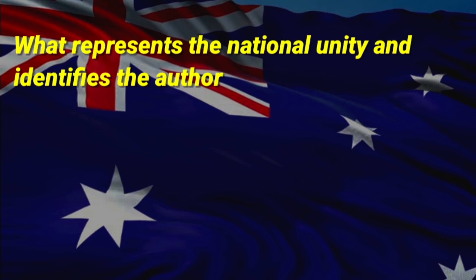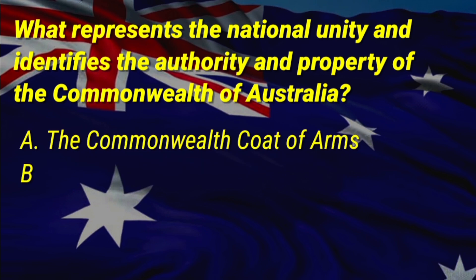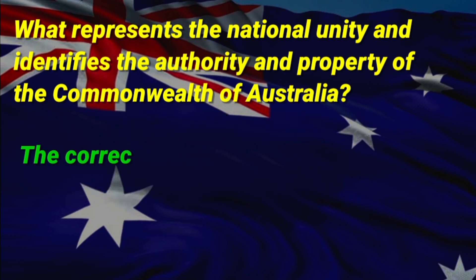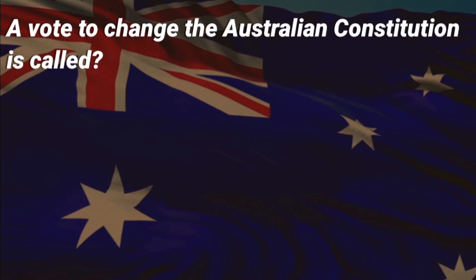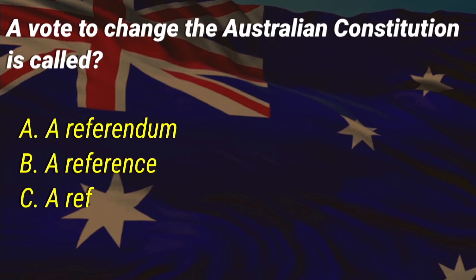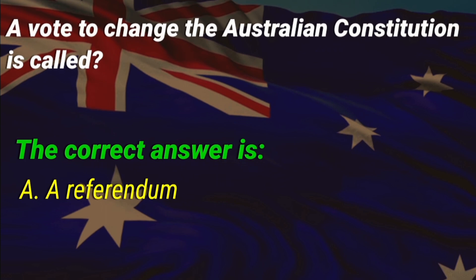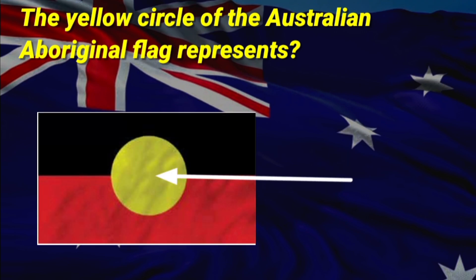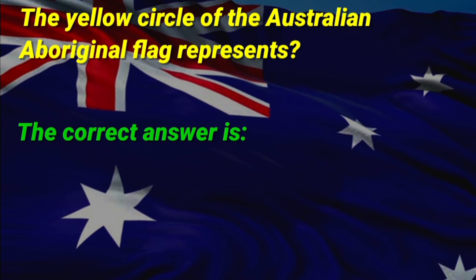What represents the national unity and identifies the authority and property of the Commonwealth of Australia? A: the Commonwealth coat of arms. A vote to change the Australian Constitution is called what? A: a referendum, B: a reference, C: a referee. The correct answer is A, a referendum. The yellow circle of the Australian Aboriginal flag represents what? The correct answer is B, the sun.